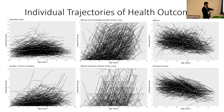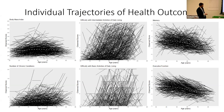Moving on to the individual trajectory plots of our health outcomes: body mass index, difficulty with intermediate activities of daily living, memory scores showing expected age-related decline, number of chronic conditions showing expected age-related increases, difficulty with basic activities, and executive functioning scores also showing expected age-related decreases over time. These are the health outcomes that we're predicting from our various composites of cumulative stress.